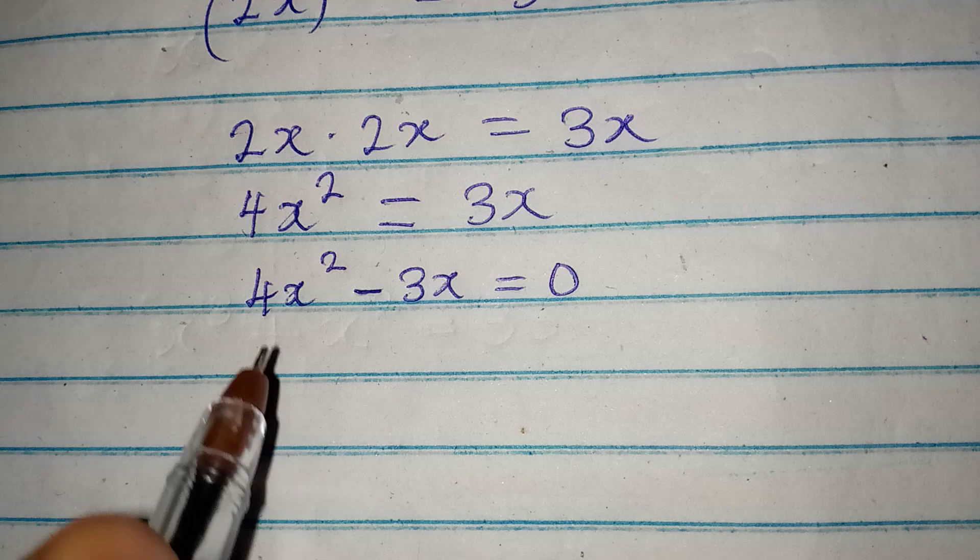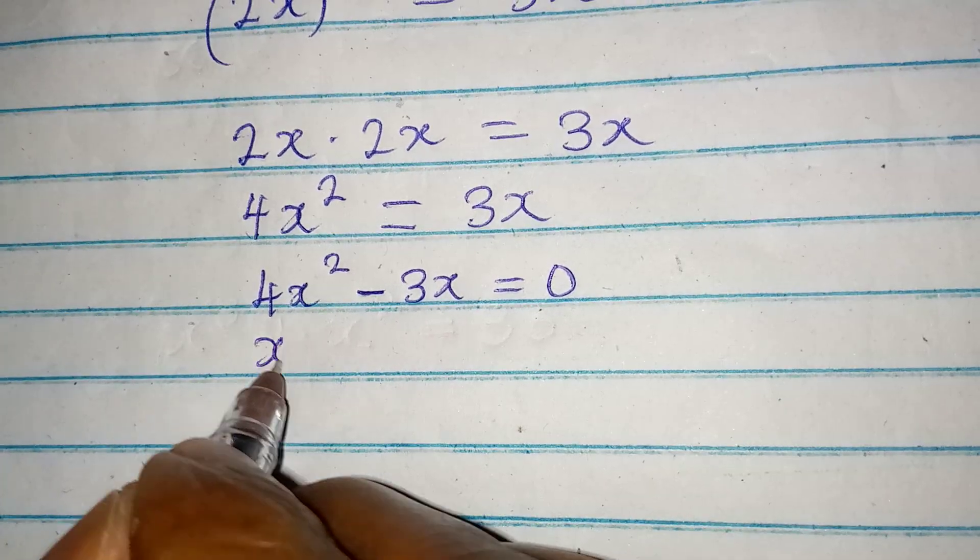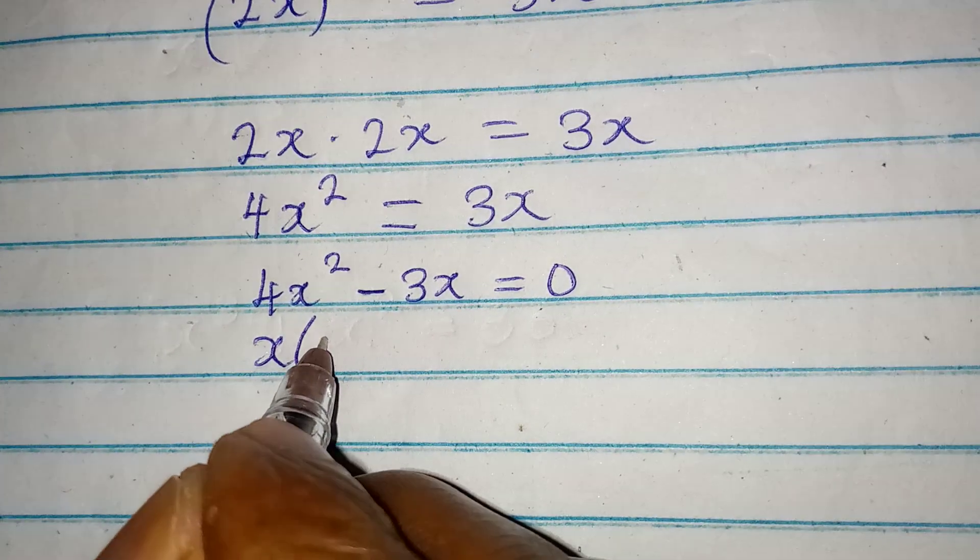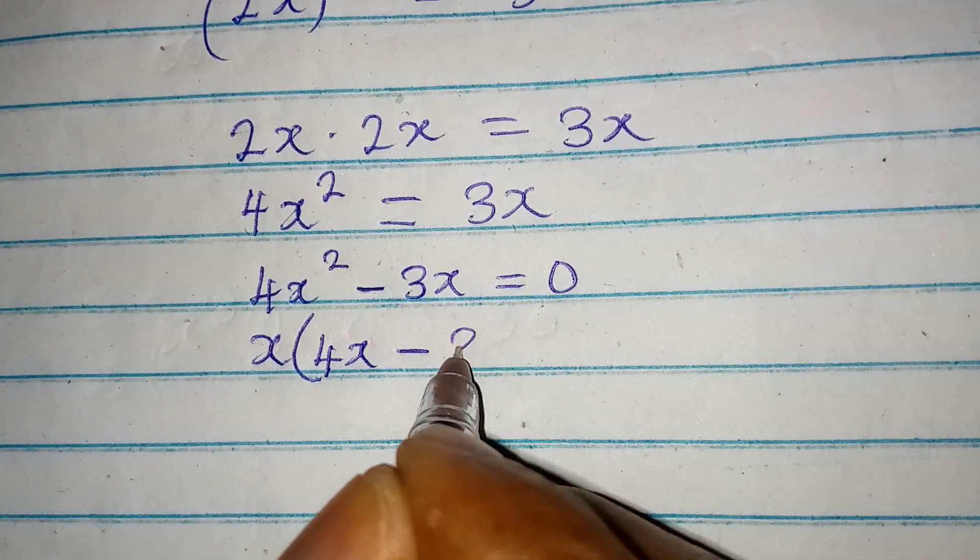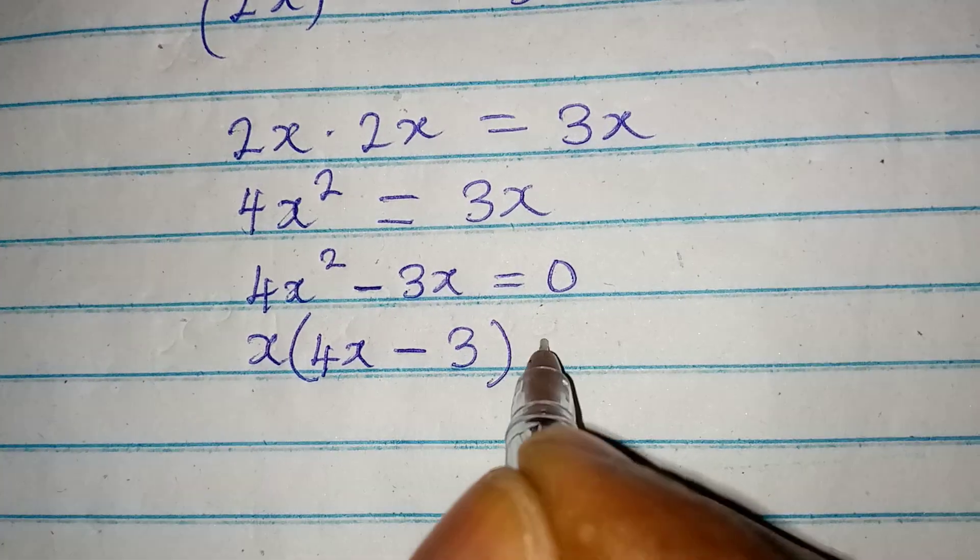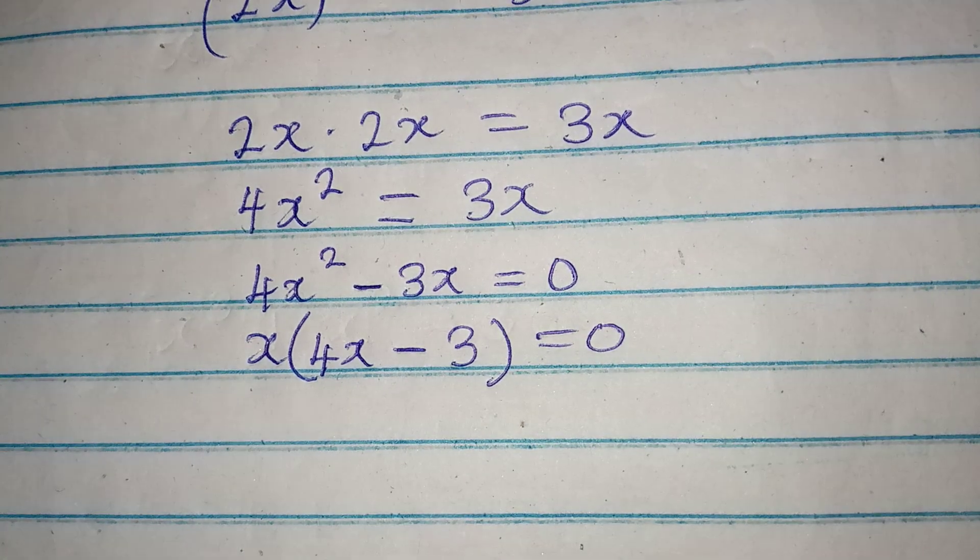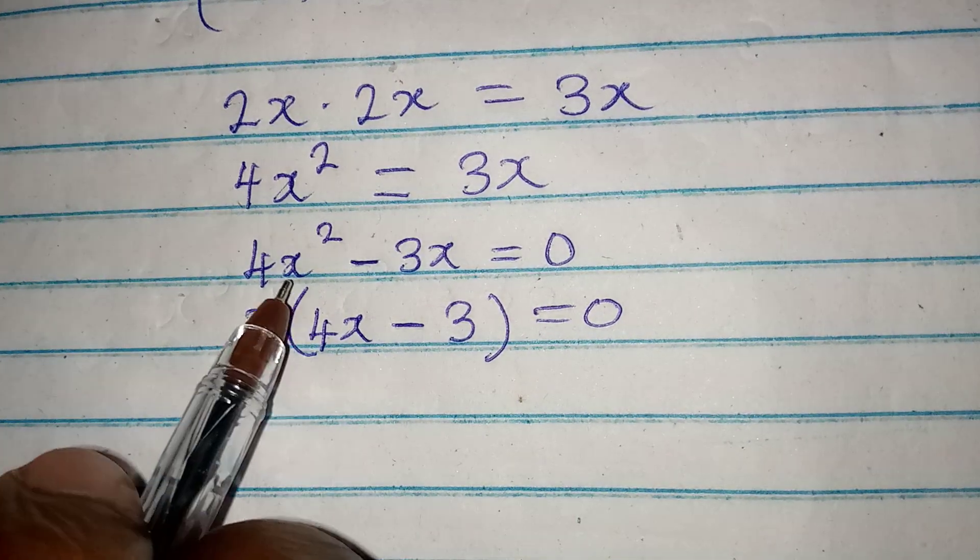Because something is common to both of them, and that is x. So here we have x(4x - 3) and this is equal to 0. Now if you open this bracket you are going to get this back.